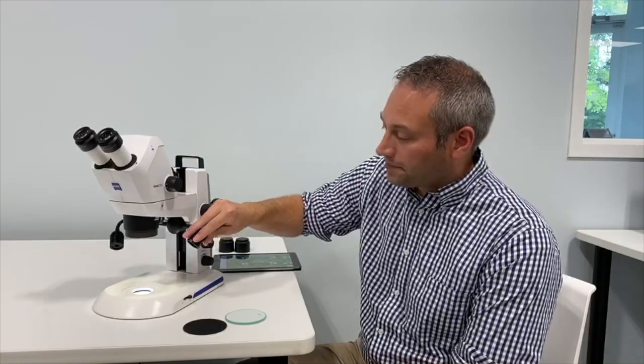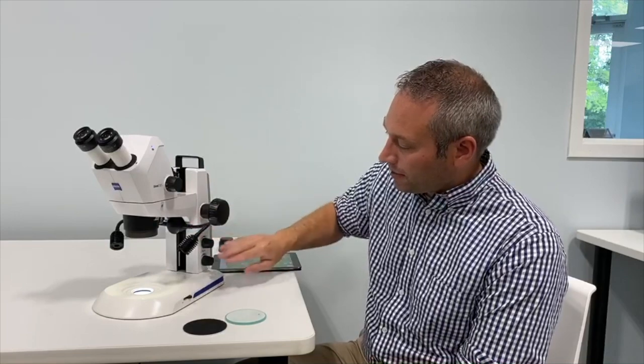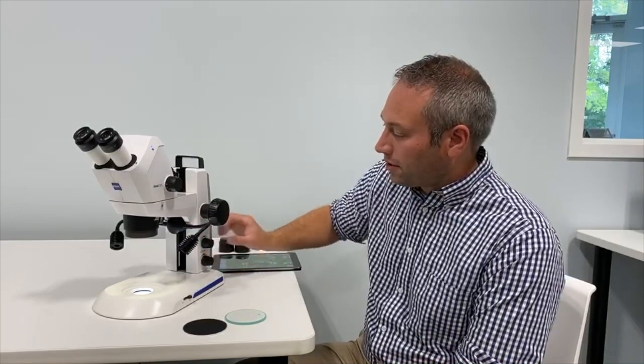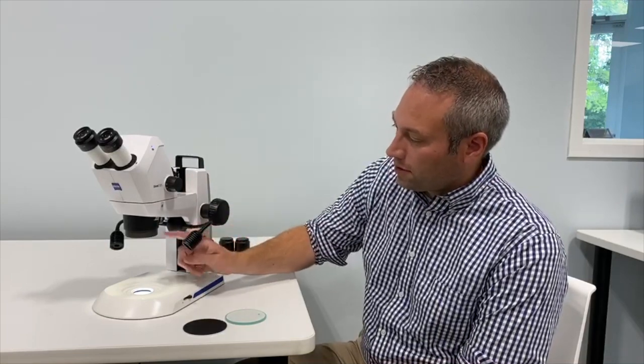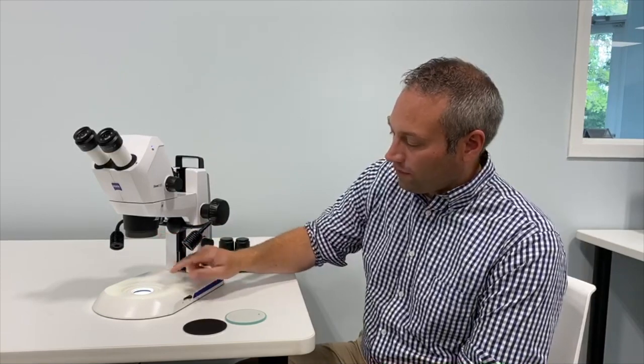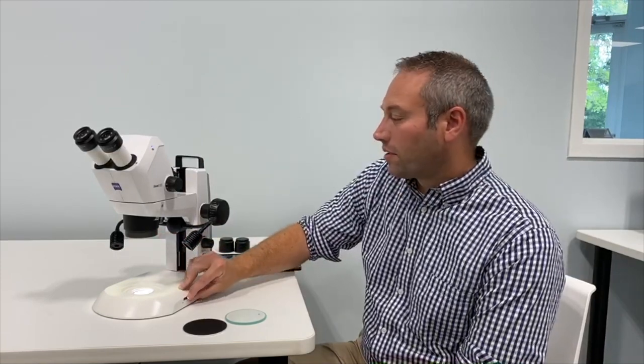Then we'll talk about the lights. We have multiple lighting techniques controlled by these two knobs here. Goosenecks, ring light, light from below, and dark field and bright field.